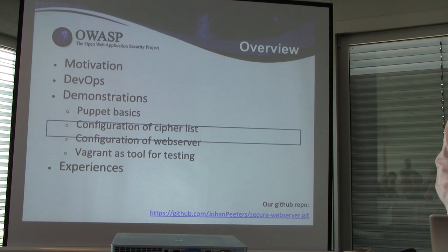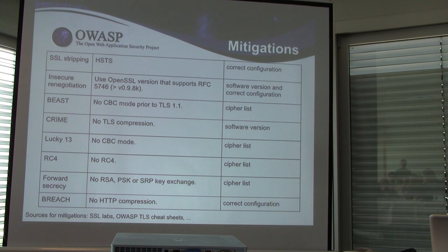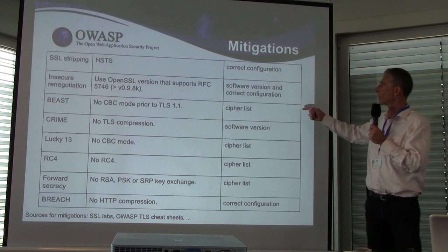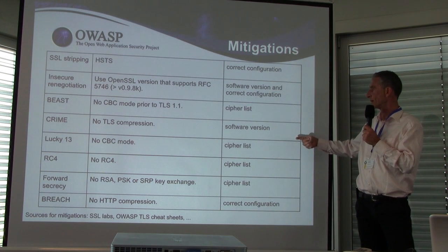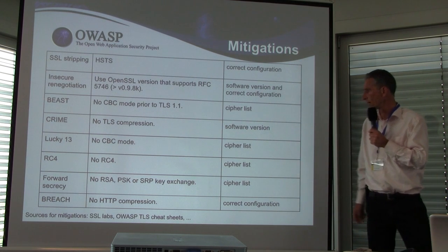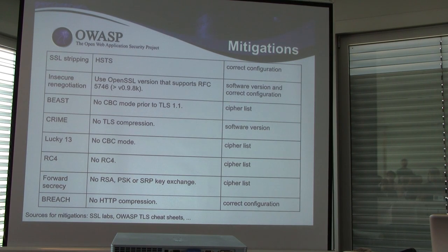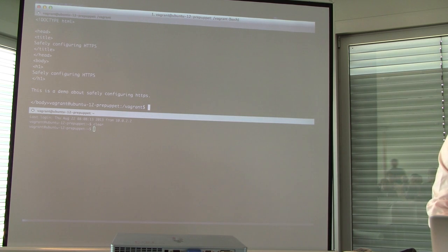What I'd like to do now is drill a bit deeper into the configuration of Nginx. As an introduction, the list of vulnerabilities that have been in the news recently — the cipher list is going to address a number of these: BEAST will be addressed by the correct configuration of the cipher list, as will Lucky 13, RC4 vulnerabilities, and forward secrecy. SSL stripping, CRIME, and BREACH will be covered in a later demonstration.